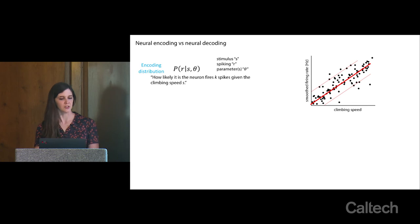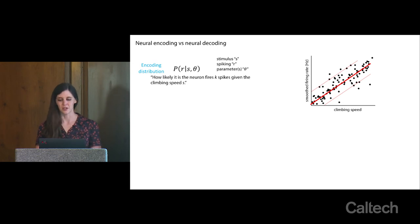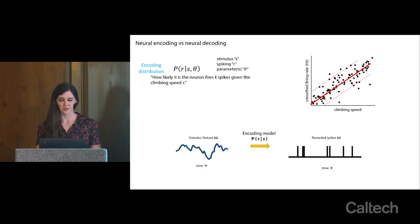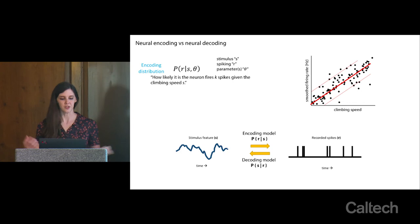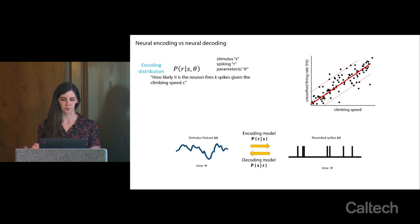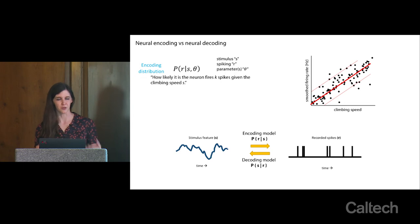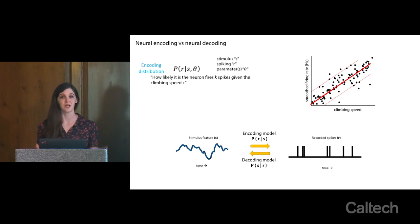Neural encoding predicts how likely it is that a neuron fires given the stimulus — going from stimulus to predicted spikes. You can also do the reverse with a neural decoding model: predicting how likely it is the animal was climbing at a given speed given the observed number of spikes. These are two very common things in neuroscience — building an encoding model to predict activity from behavior or stimulus, and building a decoding model to predict behavior or stimulus from neural activity. They're two sides of the same coin.